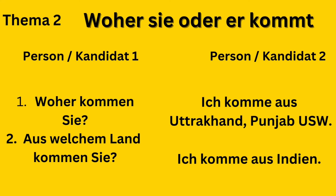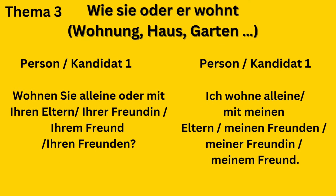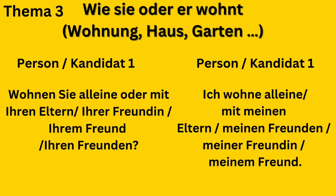For Theme 2 (Woher kommen Sie), you can simply answer: Ich komme aus Uttarakhand, or Ich komme aus Punjab, Ich komme aus Delhi, Ich komme aus Rajasthan. A second question you can ask is: Aus welchem Land kommen Sie? And the answer: Ich komme aus Indien. These are basic questions from A1 and A2. I suggest using easy, basic questions so you can ask and answer confidently.